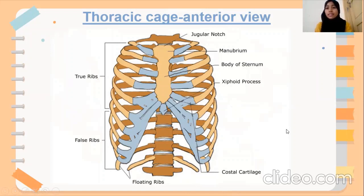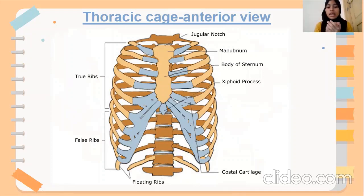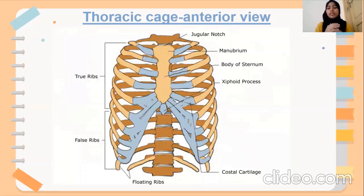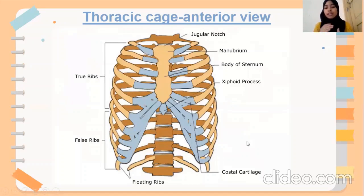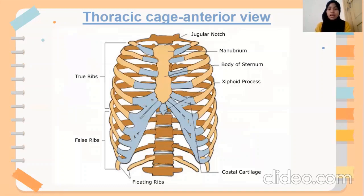Did you know what is the difference between the true ribs and the false ribs? The true ribs are actually the first seven ribs that attach to the sternum at the front part, which is the superior part of the rib cage. For the false ribs, they are the last five ribs that are not directly connected to the sternum. That is the difference between them.